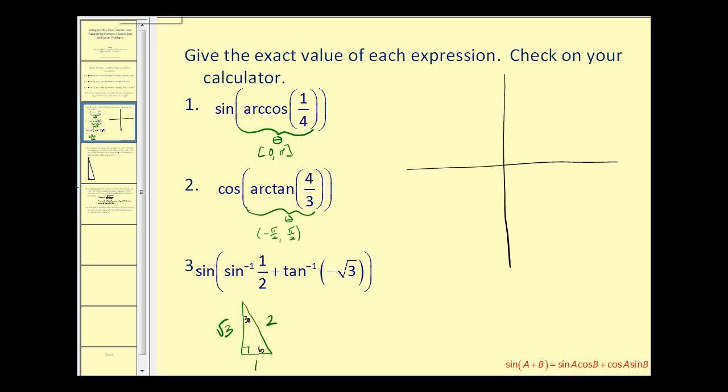So we'll sketch a reference triangle in quadrant one. Here's our angle θ, and the ratio of the adjacent to hypotenuse is 1 to 4. So we have 1 here and 4 here.